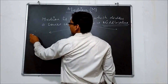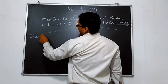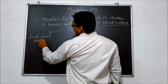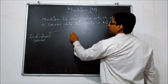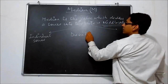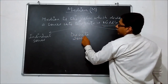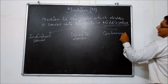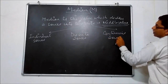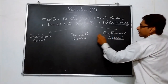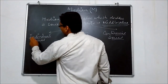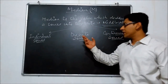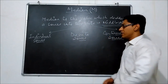Calculation of median. As we know, there are three types of series: Individual series, Discrete series, and Continuous series. So for the calculation of median, we have three formulas because there are three types of series.